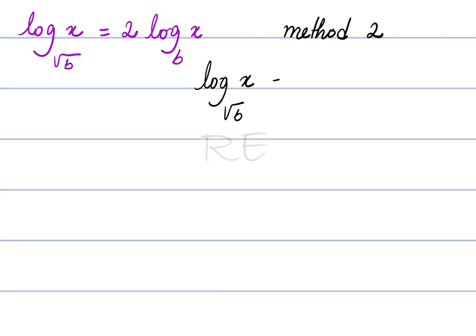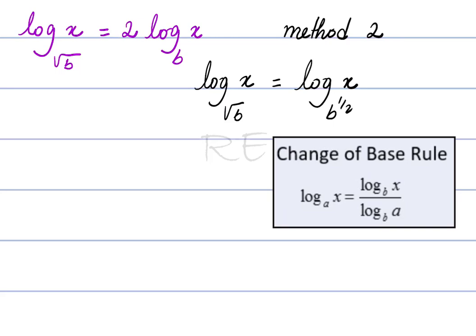Method 2. Log base square root of b of x is equal to log base b to the one half of x, since square root of b is b to the one half. By the change of base rule, it's equal to ln x over ln b to the one half.